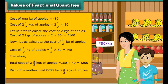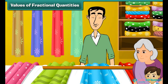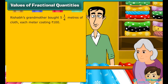Rishabh's mother paid rupees two hundred for two and half kg's of apple. Now look at another example. Rishabh's grandmother bought five and one by four meters of cloth, each meter costing rupees hundred. Find the value of five and one by four meters of cloth.